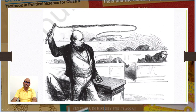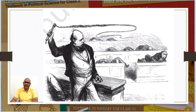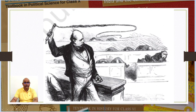The caricature depicts Bismarck holding a whip, signifying that he is a ruthless man ruling with an iron hand while leading the parliament. The elected deputies are afraid of him and are shown hiding under their tables.